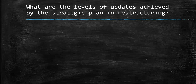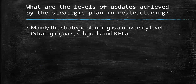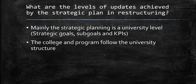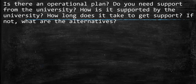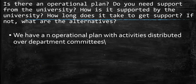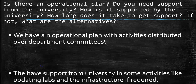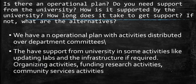What are the levels of updates achieved by the strategic plan? Mainly, strategic planning is at the university level with strategic goals, sub-goals, and KPIs. The college and program follow the university structure. The program can add initiatives, activities, and internal KPIs based on its needs. Every program has an operational plan with activities distributed over department committees. They receive support from the university for activities like updating labs and infrastructure, organizing activities, funding research, and community service activities.